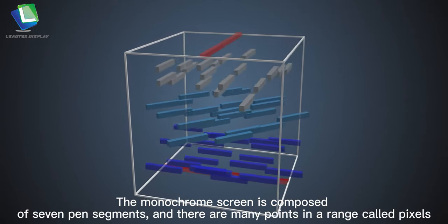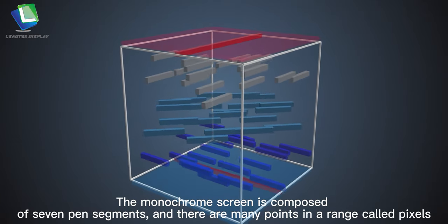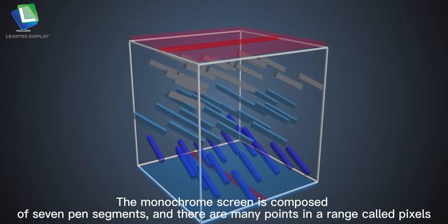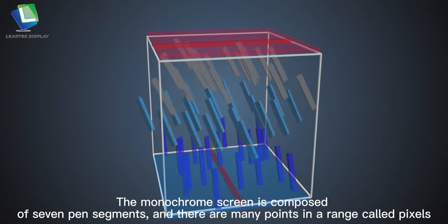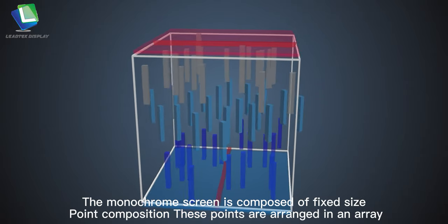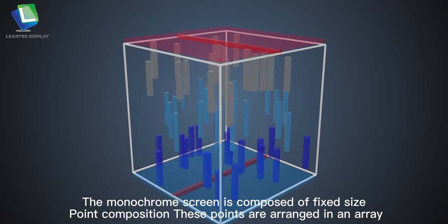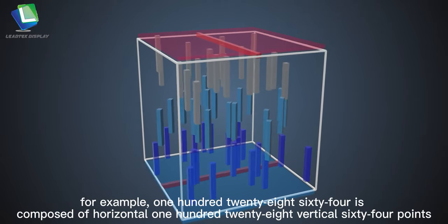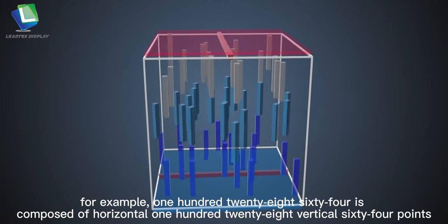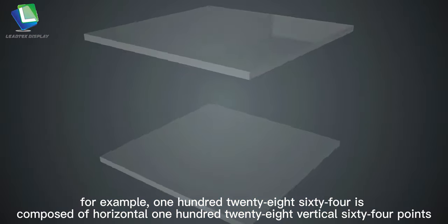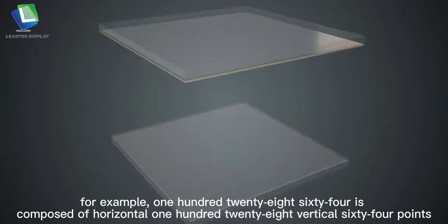The monochrome screen is composed of fixed-size points called pixels. These points are arranged in an array. For example, 12864 is composed of 128 horizontal by 64 vertical points.